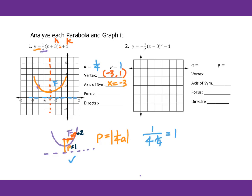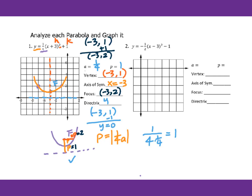For the focus, you can read from the graph or calculate. We have vertex at negative 3, 1. I go up 1, so I add 1 to the y-coordinate. The focus is at negative 3, 2. For the directrix, from vertex negative 3, 1, I go down 1, so minus 1. You get y equals 0 — that's the directrix. From the graph, you must show the focus, the directrix, and the axis of symmetry.